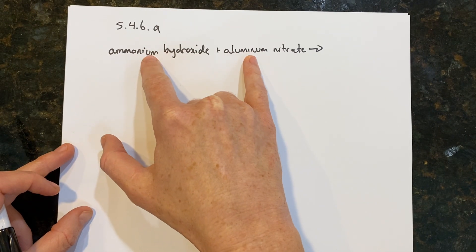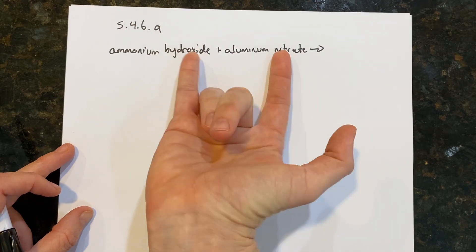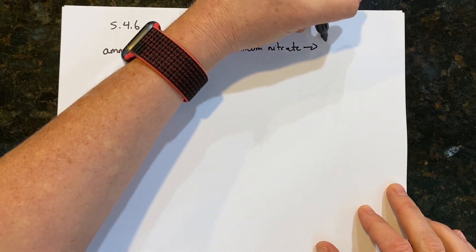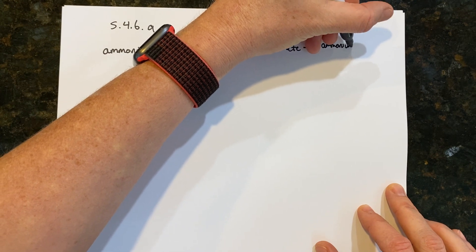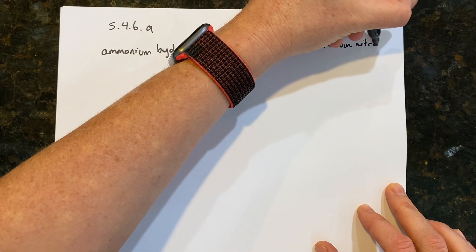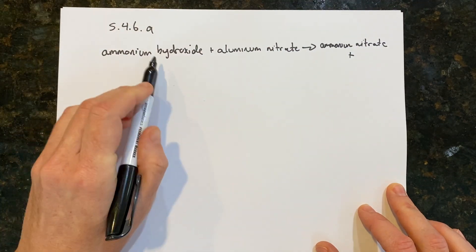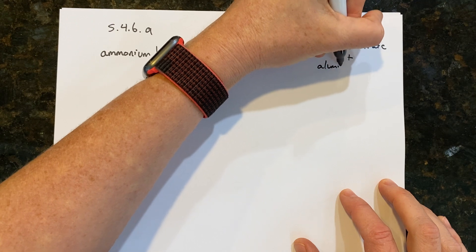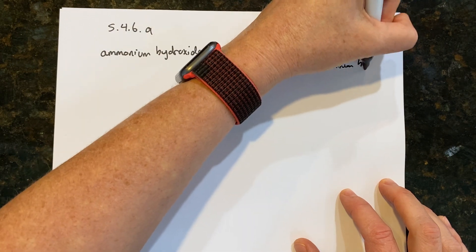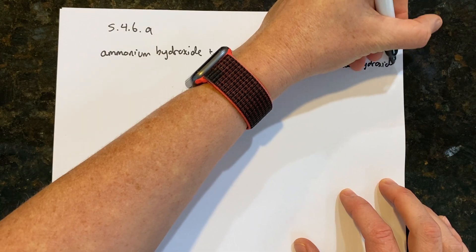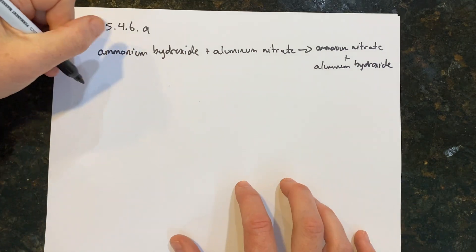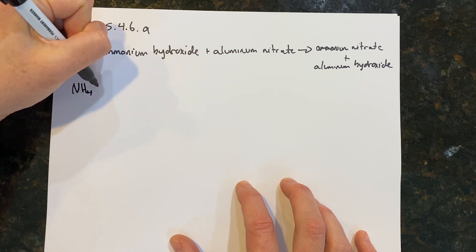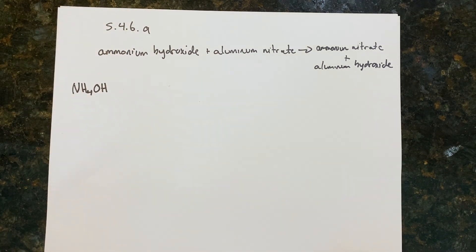Here we have ammonium and aluminum, and what's going to happen is the hydroxide and nitrate are going to switch — so we'll get ammonium nitrate plus aluminum hydroxide. Ammonium is NH4⁺ with a positive one charge; hydroxide has a negative one charge, so ammonium hydroxide is that.